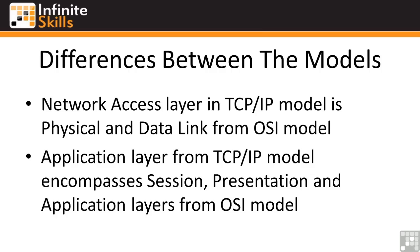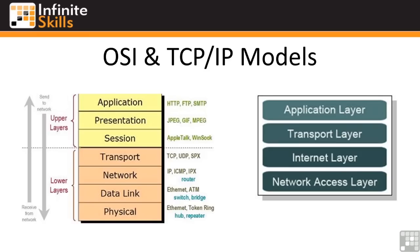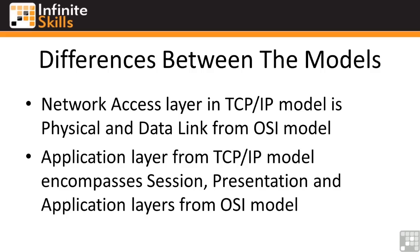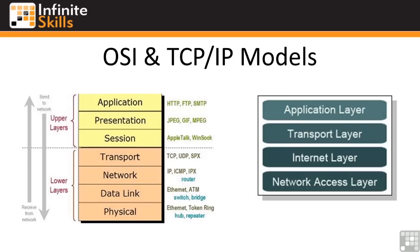There are just a couple of differences between the two models. In the TCP/IP model, the network access layer is really the same as the physical and data link layers from the OSI model. And the application layer from the TCP/IP model encompasses the session, presentation, and application layers from the OSI model. So the TCP/IP application layer covers all the functions of the three top layers of the OSI model. Really, the two stacks model the same behavior — they just break it up in different ways.